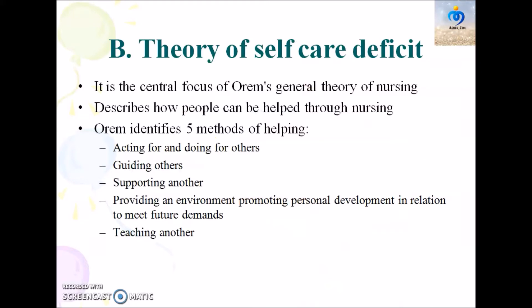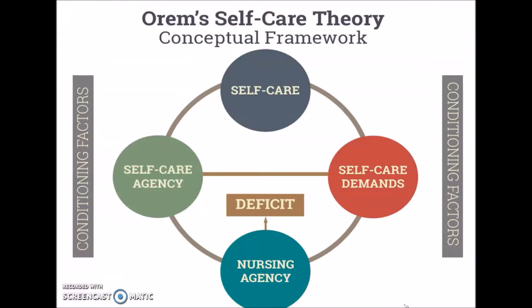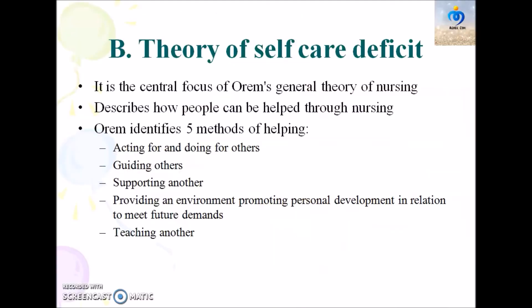The second theory is the theory of self-care deficit, which is the central focus of Orem's General Theory of Nursing. It describes how people can be helped through nursing. Orem identifies five methods of helping: acting for and doing for others, guiding others, supporting another, providing an environment that promotes personal development in relation to meeting future demands, and teaching another person.